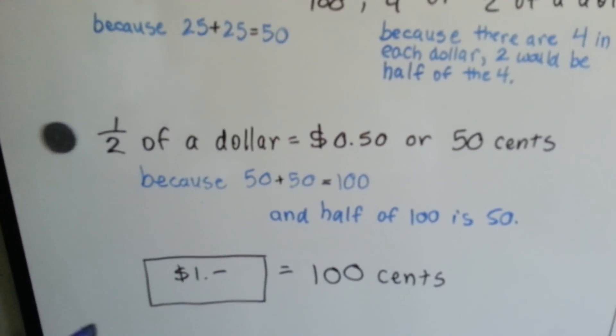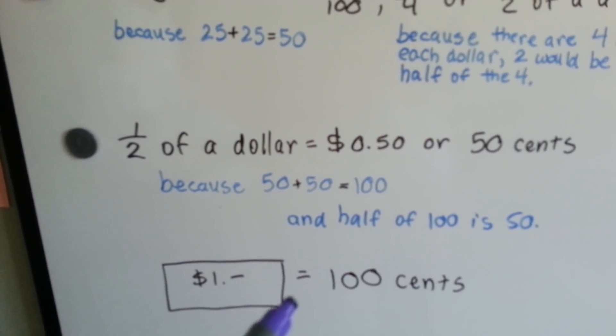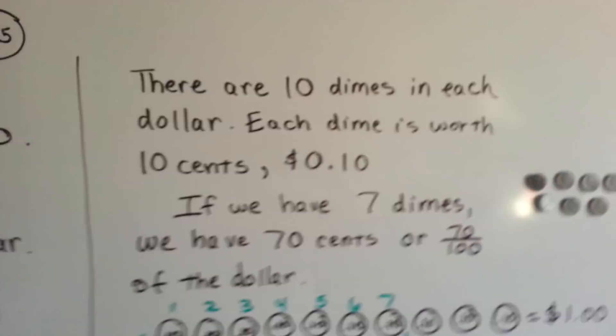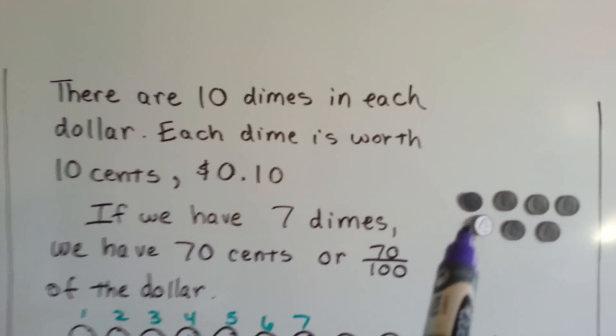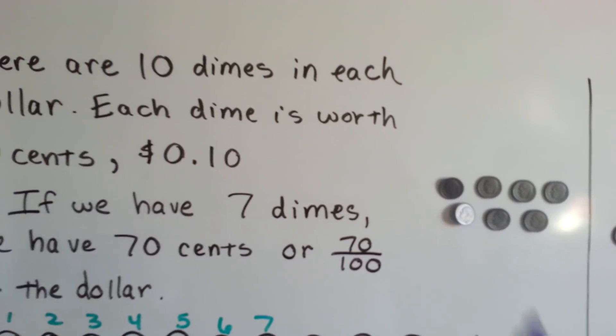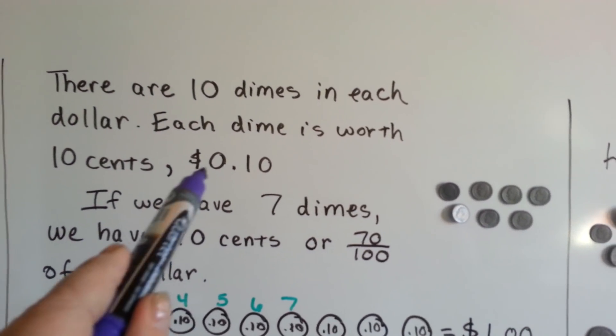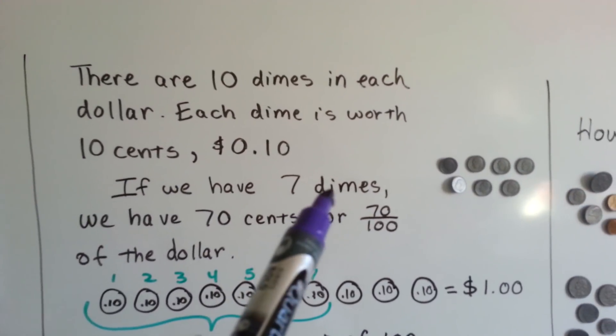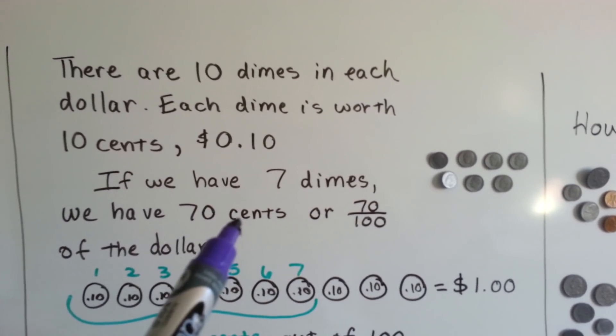One half of 100 is 50. So one dollar is equal to 100 cents. There are 10 dimes in each dollar. Each dime is worth 10 cents. Point one zero. If we have seven dimes, we have 70 cents.